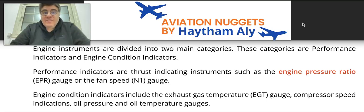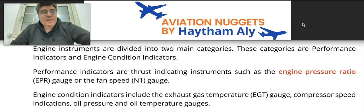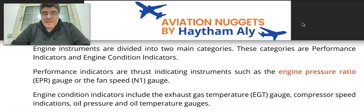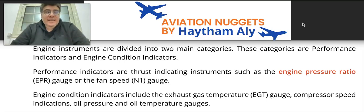On the lower E-CAM we have engine secondary parameters like oil quantity, pressure, and temperature, fuel used, and vibration indication. These indications are engine condition and engine performance monitoring indicators, and they are used for engine thrust measurement and engine thrust indication.